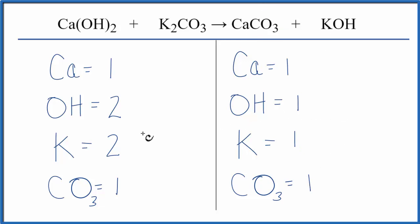It looks like all we need to do is double our potassium and double our hydroxide, and we can do that by putting a two in front of the KOH.